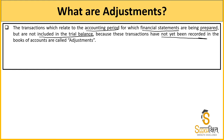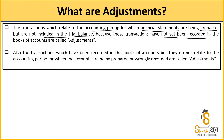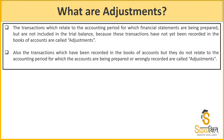Adjustment एक और चीज़ भी हो सकती है: जिसका हमने treatment कर दिया था लेकिन करना नहीं था। Suppose कोई ऐसी item थी जो हमारी accounting period से relate नहीं करती थी, लेकिन हमने उसे books of accounts में record कर लिया। उसे हटाने की method को भी हम adjustment कहेंगे — the transactions which have been recorded in the books but do not relate to this accounting period।